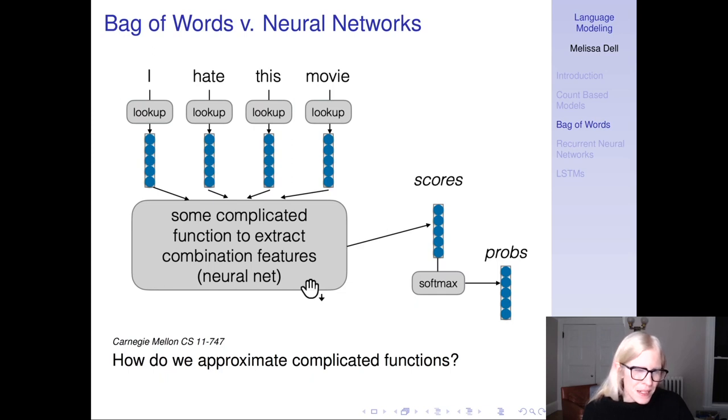Instead of just looking up each word and then adding up, we need some complicated function to extract combinations of features, and then we can use that to compute scores and probabilities. How do we approximate a complicated function? If you learn only one thing from this class, please please let it be that deep neural networks are the way that you would approximate a very complicated function. Obviously, this is going to be a task that neural networks are going to be helpful for.